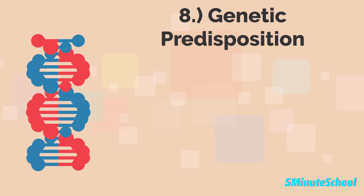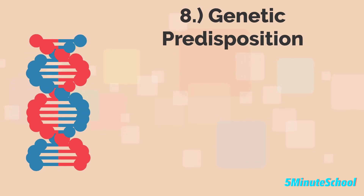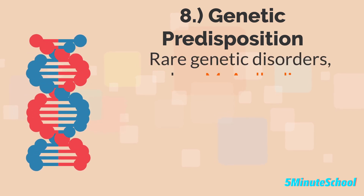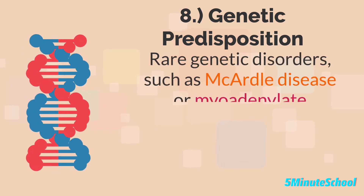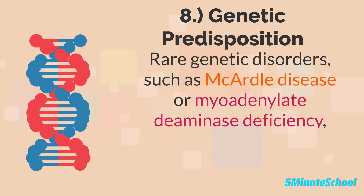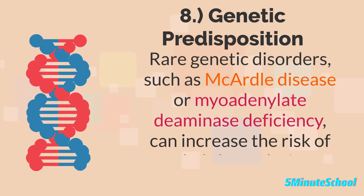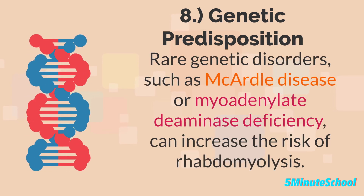Some people also have a genetic predisposition to rhabdomyolysis. They may have rare genetic disorders such as metabolic myopathy or myoadenylate deaminase deficiency, and these can increase the risk of rhabdomyolysis.